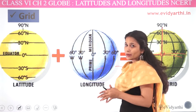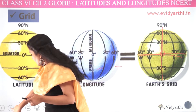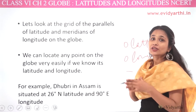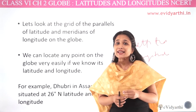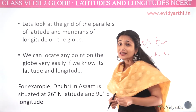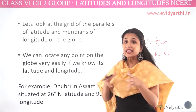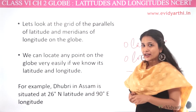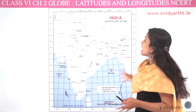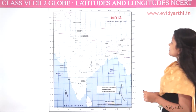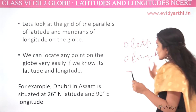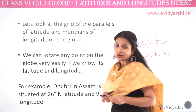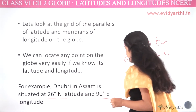We can see that we have a place in India which is called Dhubri, which is in Assam. It is 26° north latitude and 90° east longitude. Let's try to find out on our map. So how do we find 26° north and 90° east?